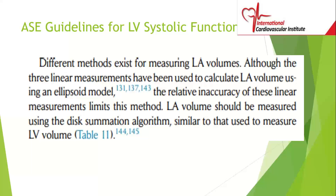There are different methods for measuring left atrial volume. The relative inaccuracy of linear measurements limits that method. Left atrial volume should be measured using the same approach as left ventricular volume — the disc summation method. The left atrial endocardial border should be traced in both the apical four and two-chamber views. Alternatively, a biplane calculation can be performed using area and length, but the recommended method is the disc summation.